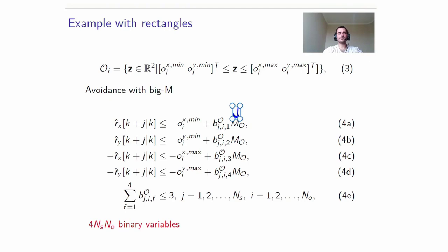Since we have to avoid collisions with obstacles at foresight in our example, only three of the binary variables are allowed to be 1 and relax the respective constraints. This means that at least one of them will be 0 and then the obstacle collision will be avoided, as we will be either to the left, to the right, above or below the obstacle. Please notice that this requires 4 times NS times O binary variables.